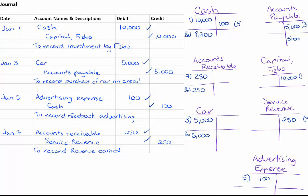Accounts payable has a balance of $5,000 as a credit balance. For FSBO Capital, I've got a $10,000 balance. Service revenue has a $250 credit balance. And advertising expense has a $100 balance as a debit. You'll notice I didn't actually write debit or credit anywhere on my T-accounts — we know that debit means left side and credit means right side. So if you go through and look at the T-accounts compared to your ledger balances from the last video, the balances are exactly the same.